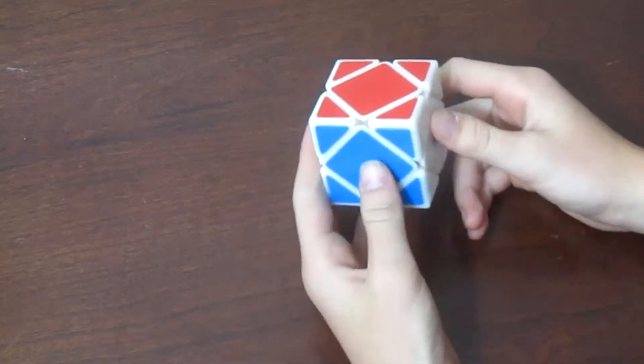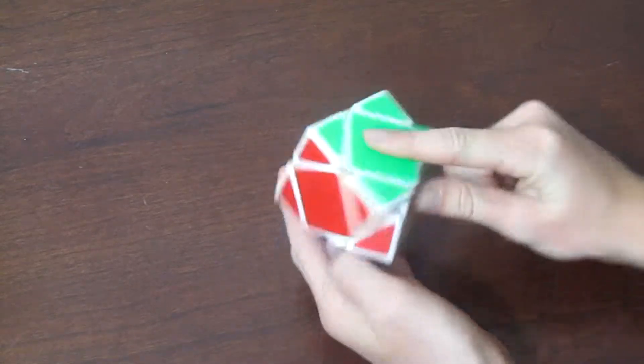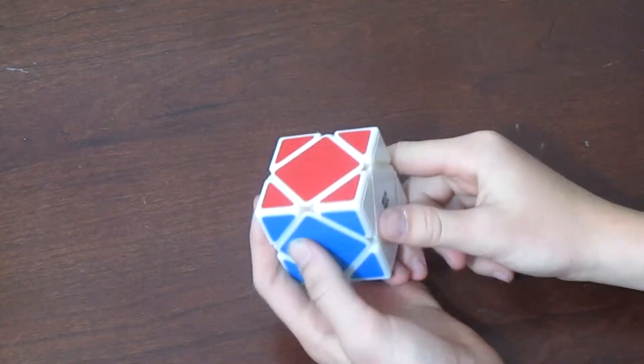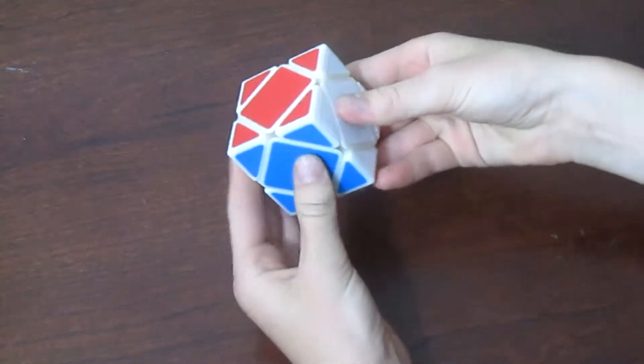So this is my top right here. You're gonna put your thumb right here, pointer finger on which used to be the top, which is my green, and then my middle finger and ring finger, which is optional on the bottom, which is my orange.